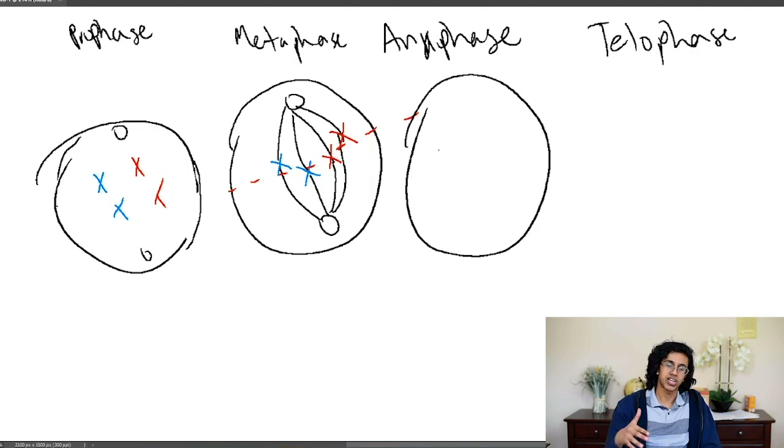And then, anaphase is where things actually happen. This is the interesting part, because basically, what happens is it separates, splits up these guys. So now, these chromosomes are split into their identical sister chromatids, remember? So they split, and they get pulled to the pole.